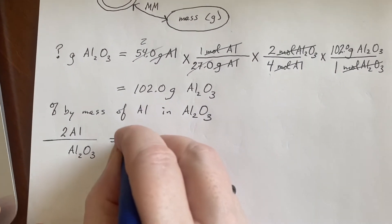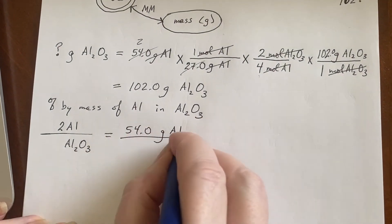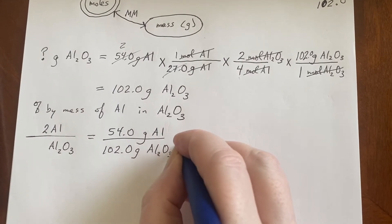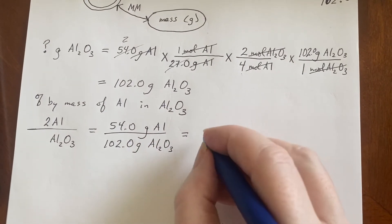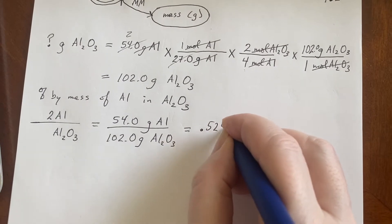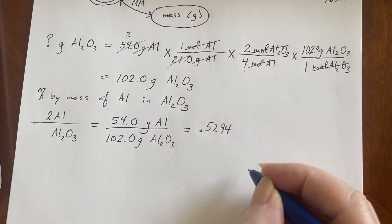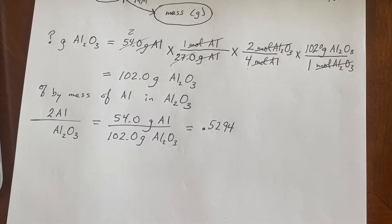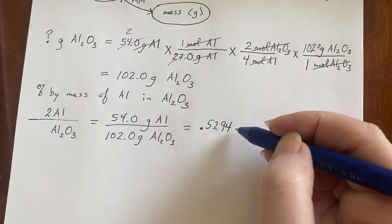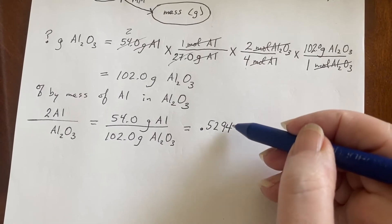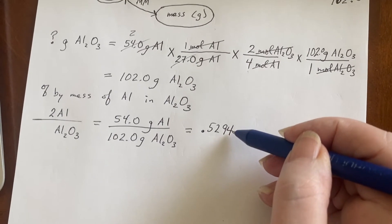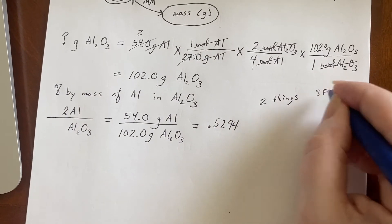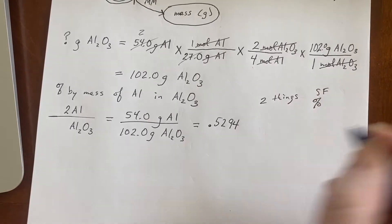So that's 54 grams of aluminum in 102 grams of aluminum oxide. Now if I go and hit my calculator on this, you end up with 0.5294, which since we were working with only three sig figs before, means that I should ignore the four. And furthermore, this isn't a percentage.